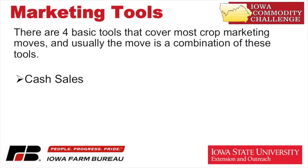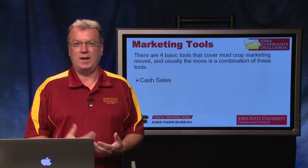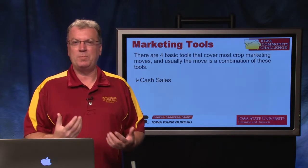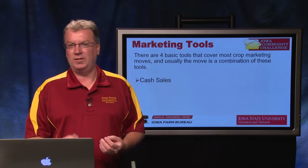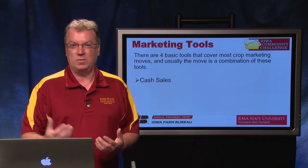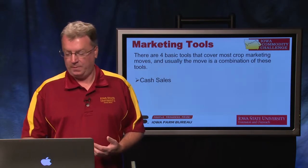First and foremost, there's the straight cash sale. This is the one that most of us are used to — how roughly two-thirds of commodities are traded today. The producer creates the product, goes to the point of first sale, and literally sells it for the cash price on that day. It's like a sale at your local convenience store, Walmart, or Target — a simple cash sale.